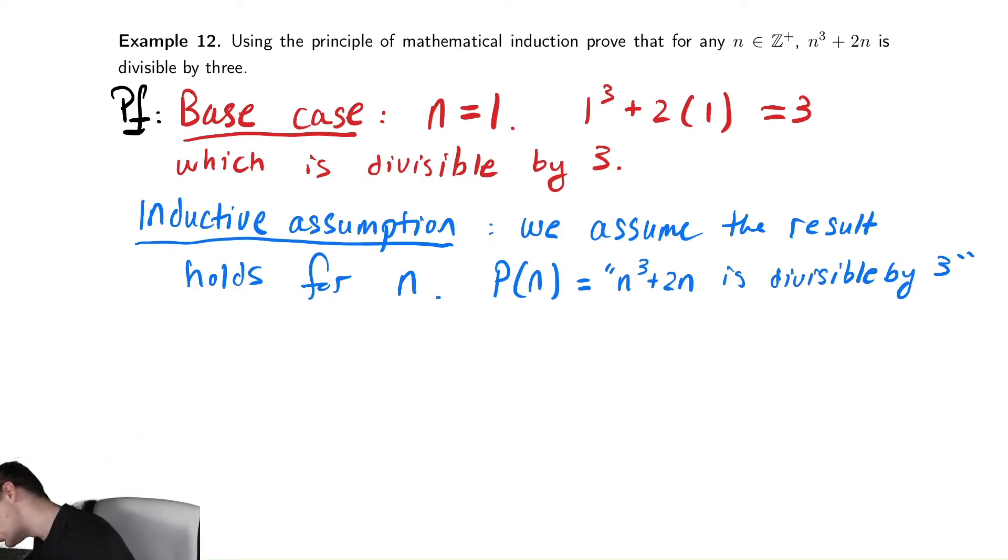And we want to show, want to show P(n+1) is true, which in this case is that (n+1) cubed plus 2 times (n+1) is divisible by 3. That is whatever we wrote above, but with one more in all the places that n appears, is divisible by 3.